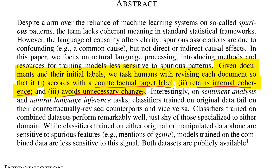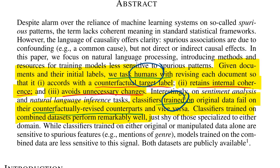The counterfactual target label corresponds to the contrast set's requirement to change the label; retaining internal coherence maps to conforming to the intent of the dataset makers; and avoiding unnecessary changes maps to only searching in the local environment of a test set sample. They also show classifiers trained on original data fail on counterfactually revised counterparts — also done by the contrast set paper. But then they say classifiers trained on combined datasets performed remarkably well, just shy of those specialized in either domain.